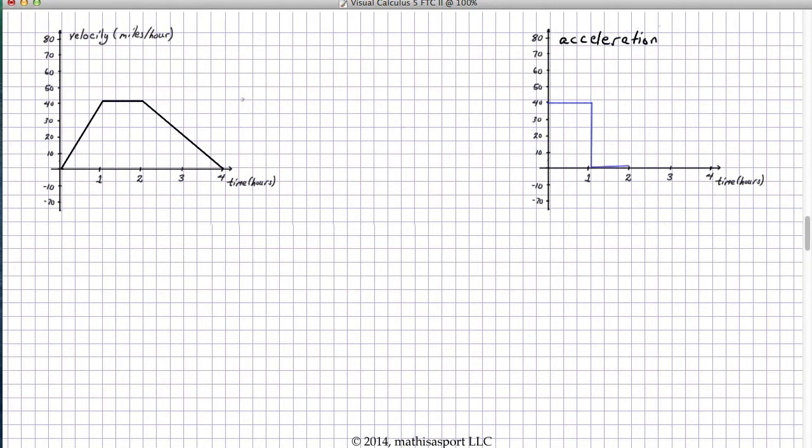For hours three and four, we gradually decline in velocity down to zero over the course of two hours, down from 40. So that's an acceleration of negative 20.